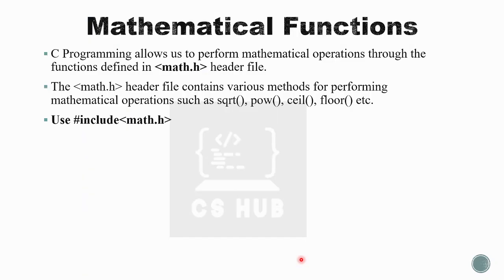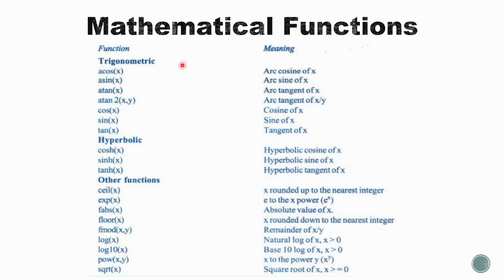The next topic is mathematical functions. C programming allows us to perform mathematical operations through the functions found in the math.h header file. We use #include <math.h> just as we use #include <stdio.h>. The math.h header file contains various methods for performing mathematics, like square root, power, ceil, floor, and more. When we include this header file, we can use all those functions in the program.